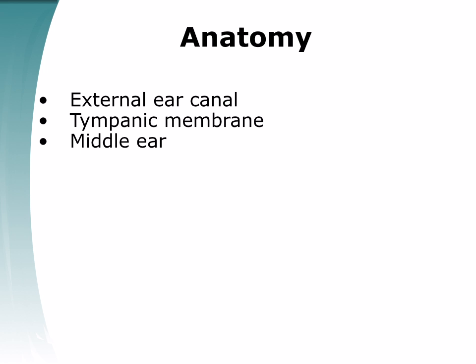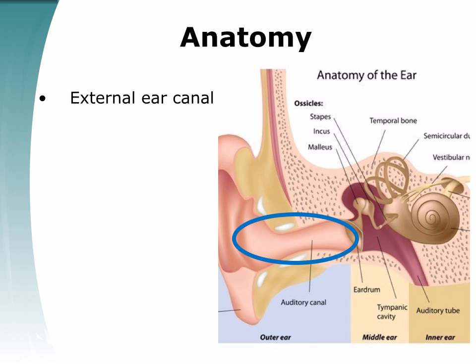It is important to understand the anatomy of the external ear canal, tympanic membrane, and middle ear in order to successfully perform a Maringotomy and tube placement. The external auditory canal is comprised of the lateral and medial portions. The lateral portion is cartilaginous with thick, loosely applied skin containing ceruminous and sebaceous glands.